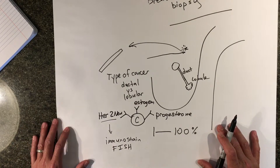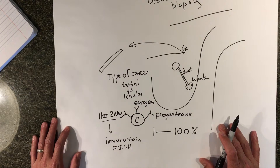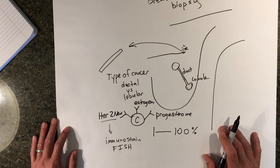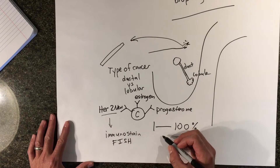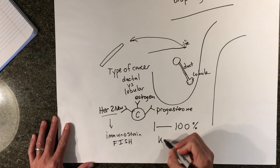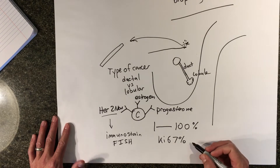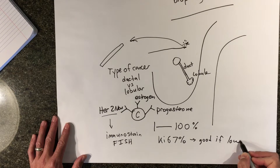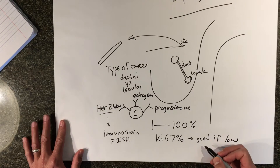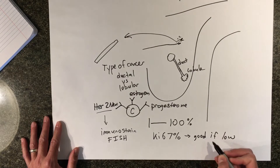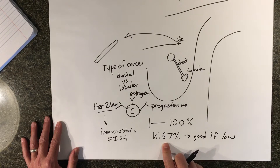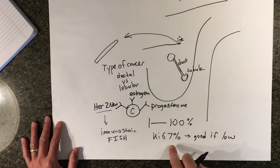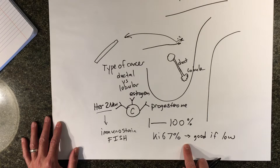Those are the things we look at on the biopsy that help distinguish one breast cancer type from another. Another marker that is useful to most breast cancer doctors is a KI67 percentage, and this is good to be low — we want to see this in the single-digit numbers or teens. If the KI67 percentage is a high number, that can signify that there's a lot of division of cells, which indicates a rapidly growing tumor and can be more aggressive.